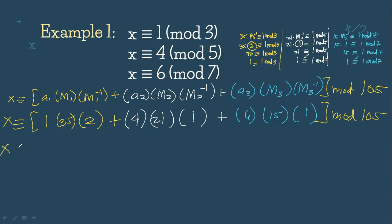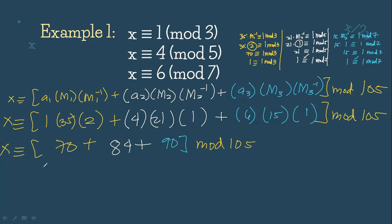Now let's simplify. x ≡ (1 × 35 × 2) + (4 × 21 × 1) + (6 × 15 × 1) = 70 + 84 + 90 = 244 (mod 105). Since 244 divided by 105 gives a remainder of 34, x ≡ 34 (mod 105). This is our answer.